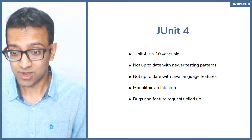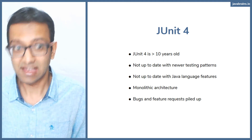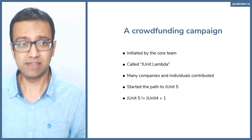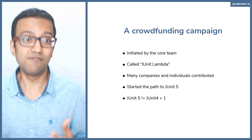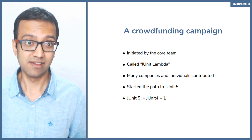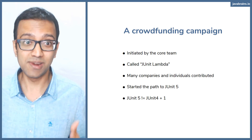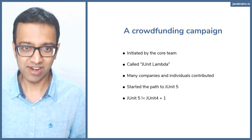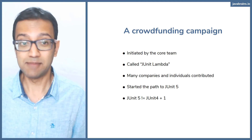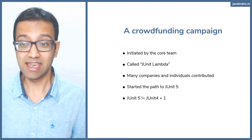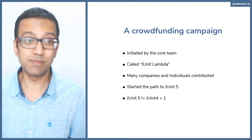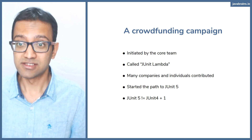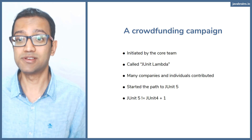What actually happened was — and I find it surprising — there was a crowdfunding campaign initiated by the core team saying, we have work to do and we need money to do this work. Everybody uses JUnit, but nobody was financing it. So there was a core team crowdfunding campaign, and they called it JUnit Lambda. People realized that JUnit, which is everybody's bread and butter, was in need of money in order to make improvements. So they contributed to it.